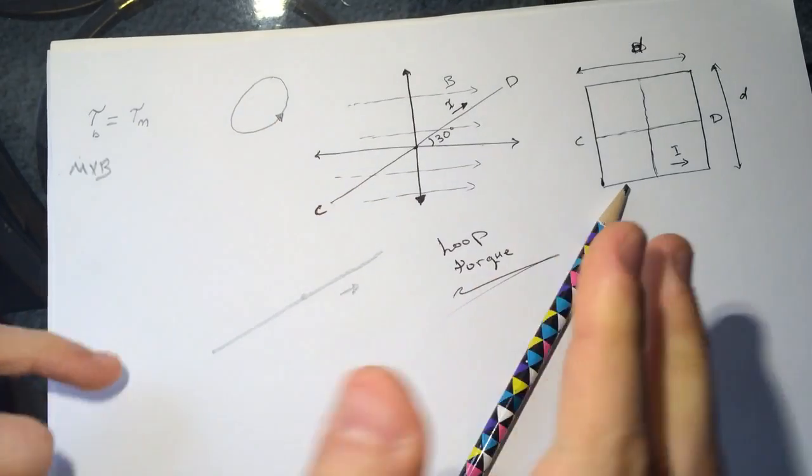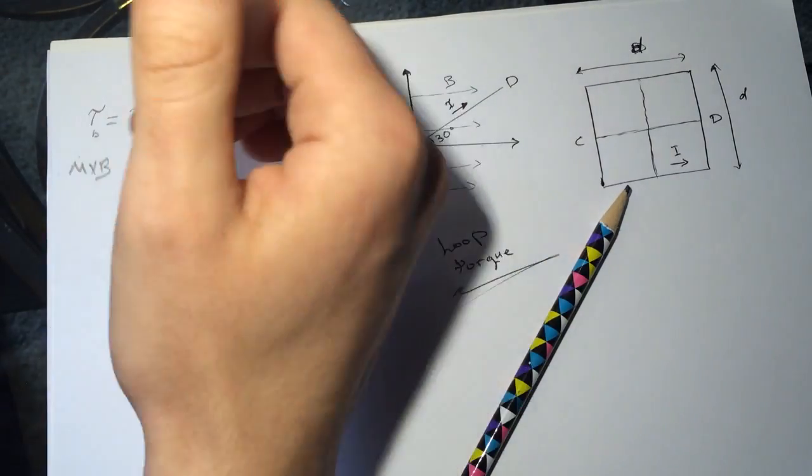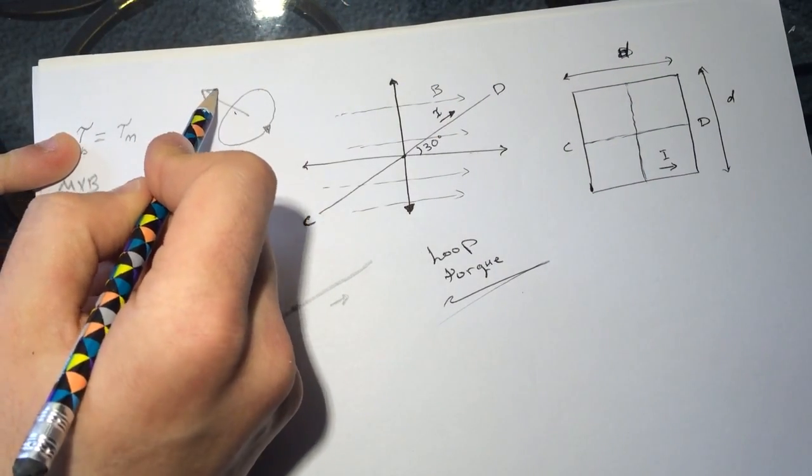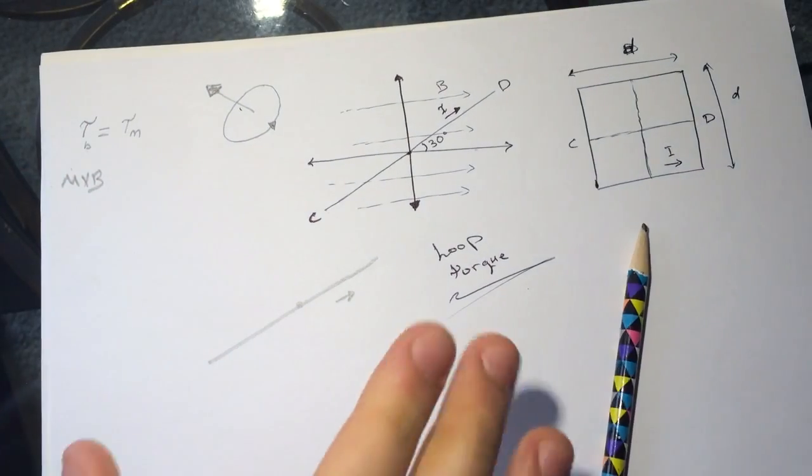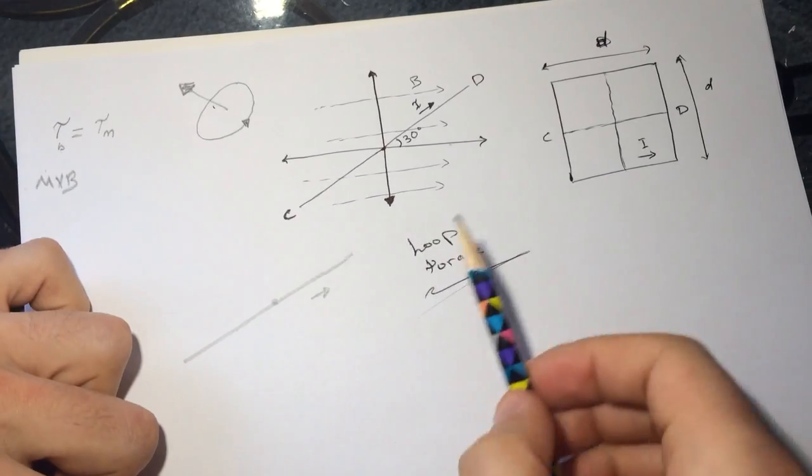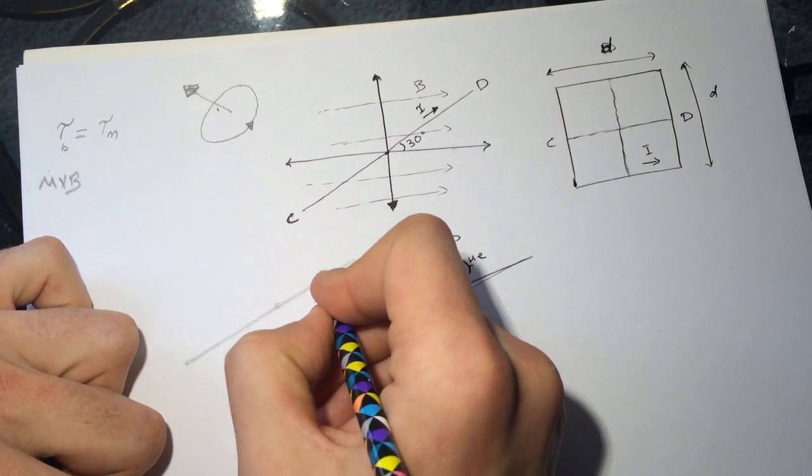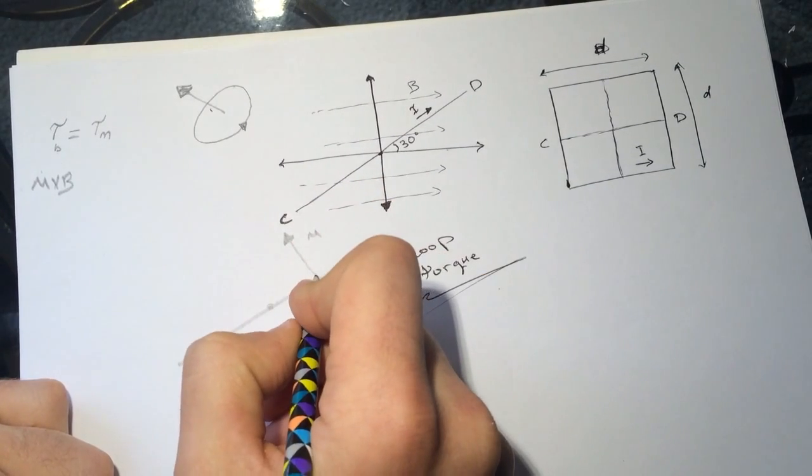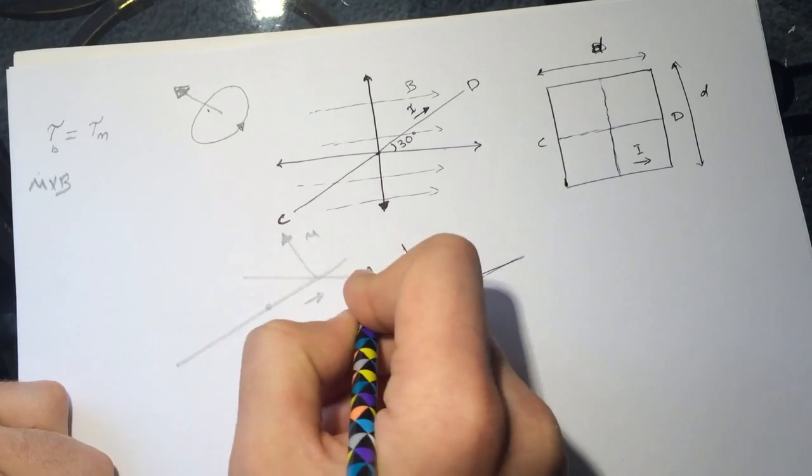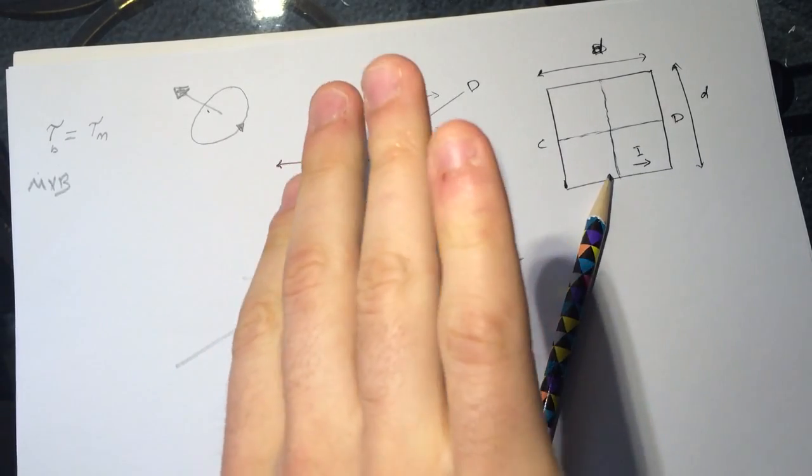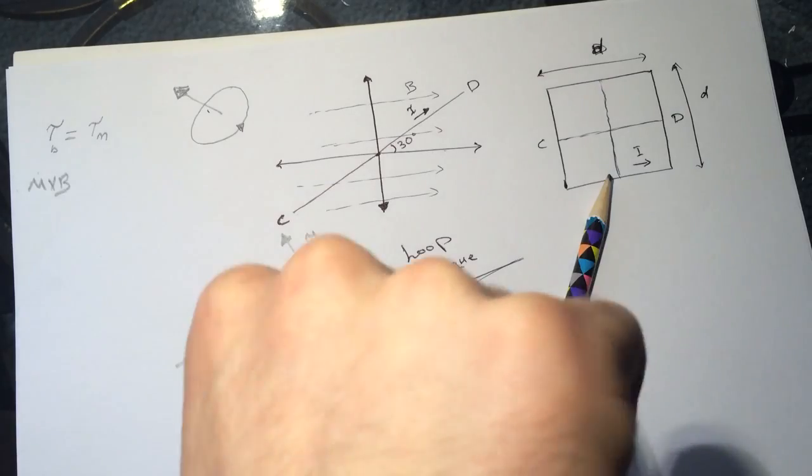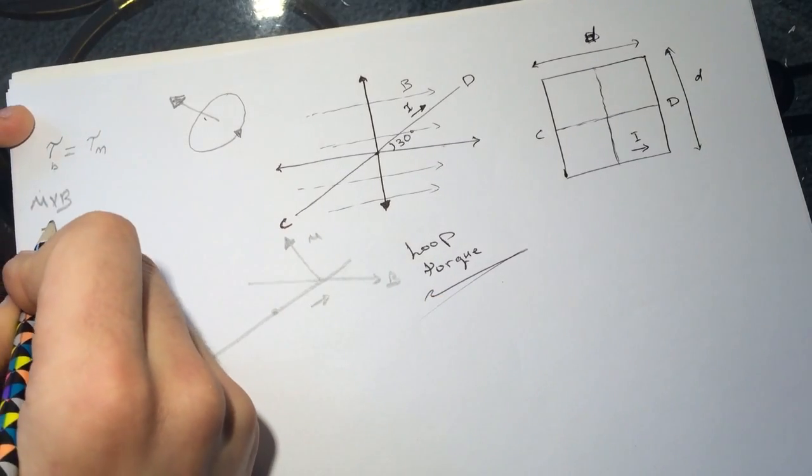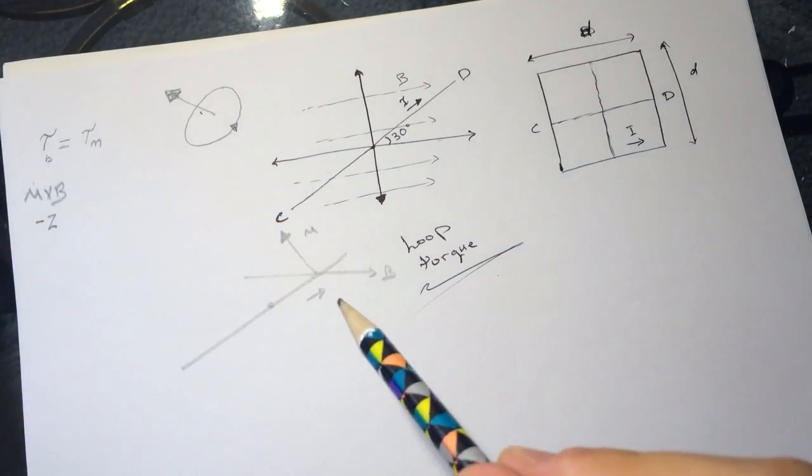Cross your fingers with it - the dipole moment is going this way. Here is the B going this way, so μ cross B is in the negative Z direction. In order for this to be in equilibrium, we need the other torque to be pointing in the positive Z.